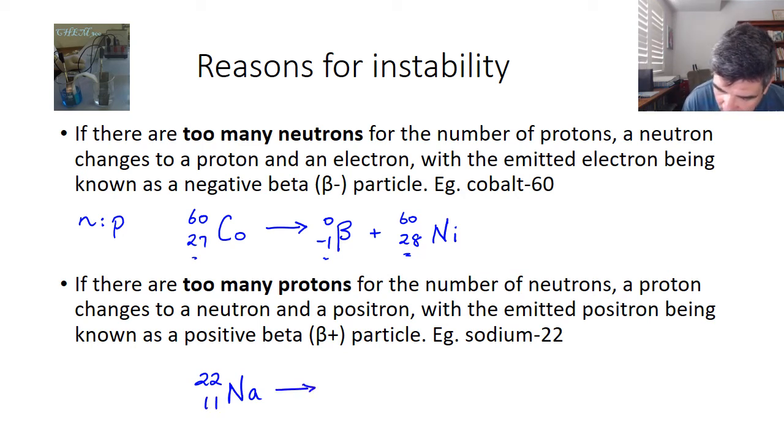So again, if we write our equation, but this time we make our beta particle a positive particle, I'll put the negative there and a positive there just to give you that idea. So this time, this number is plus 1, and of course the mass is still 0.